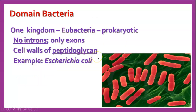Domain Bacteria has one kingdom also, called Eubacteria. They're also prokaryotes. They do not have introns in their DNA, only exons. And they do have peptidoglycan in their cell walls. An example of a eubacterium is Escherichia coli, E. coli, the common bacteria that you're used to hearing about.